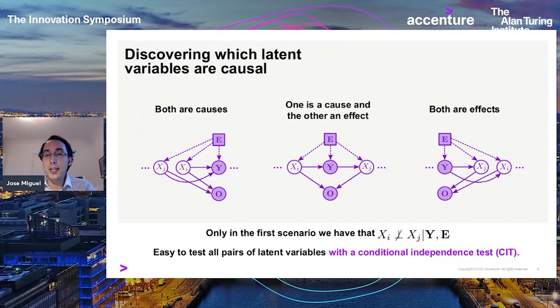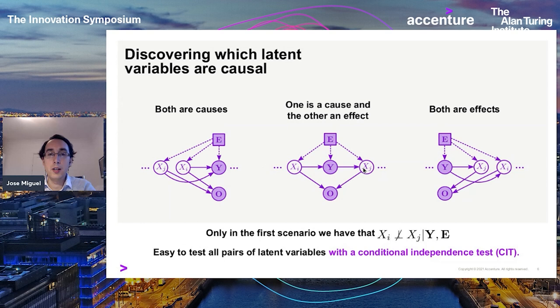Once we have estimated the true latent variables that generated the data, the question is to discover which ones cause the target. For any two latent variables X, there are three cases: both cause the target Y, one causes and one is an effect of Y, or both are effects of Y.